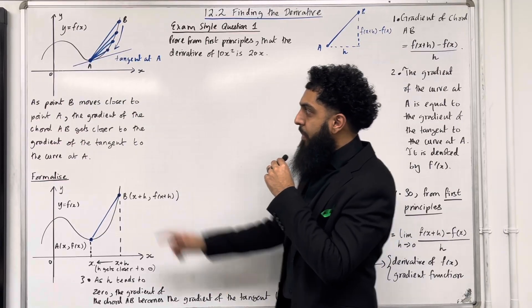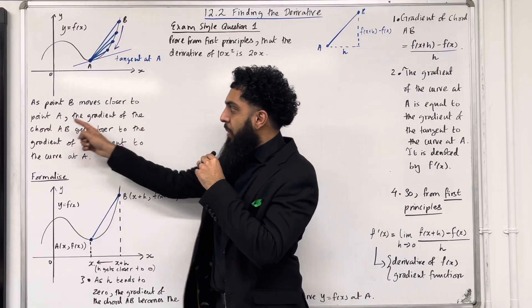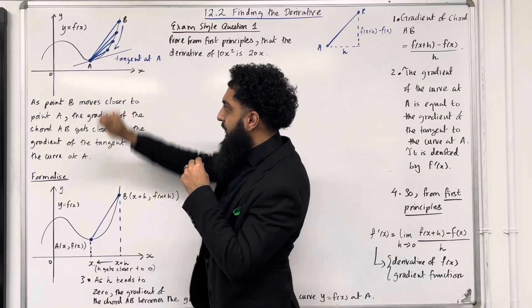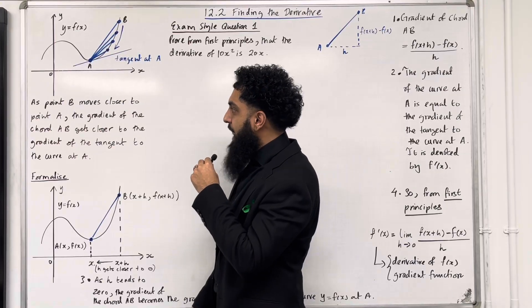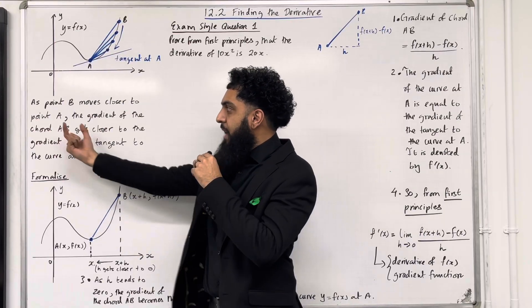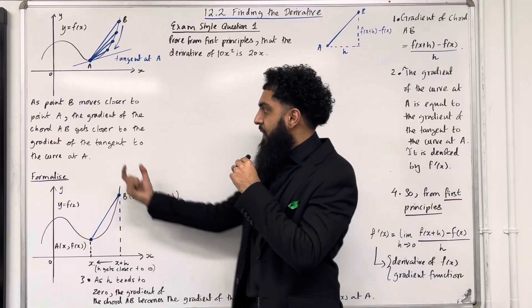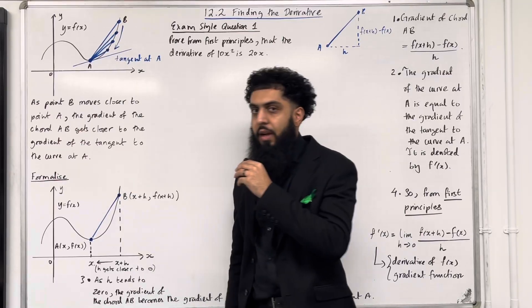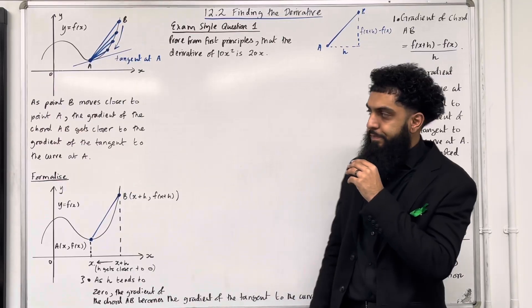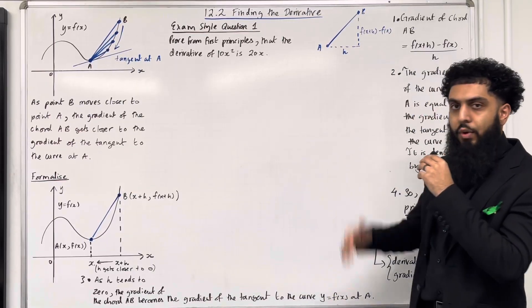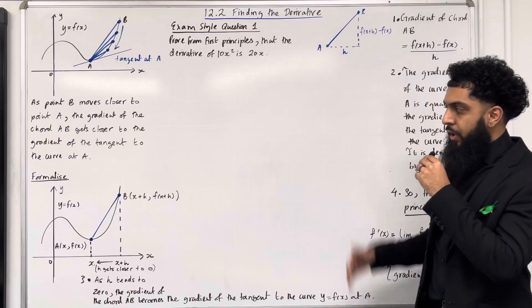As point B moves closer to the point A, the gradient of the chord AB gets closer to the gradient of the tangent to the curve at A. Let's formalise this.